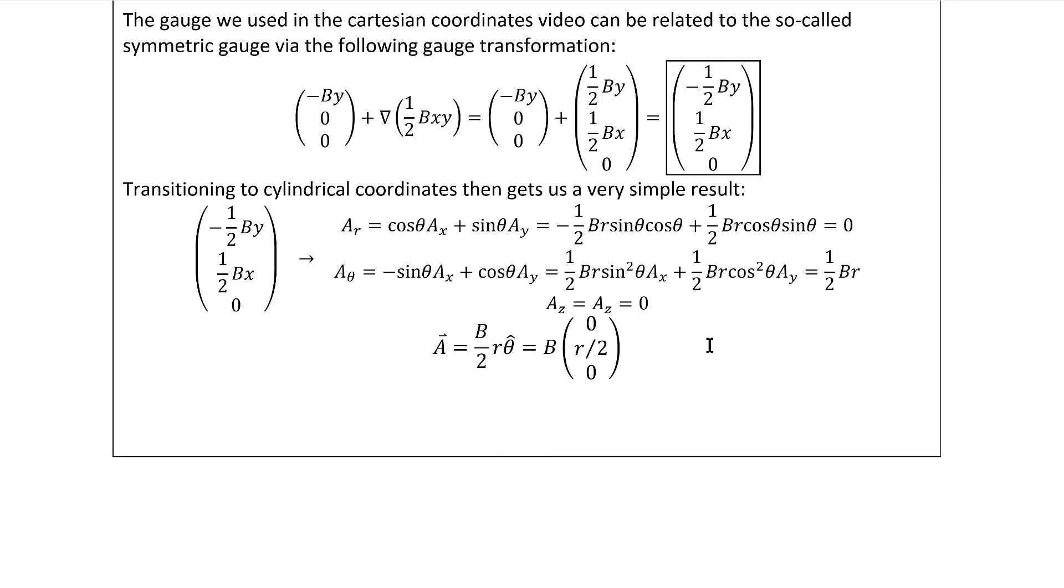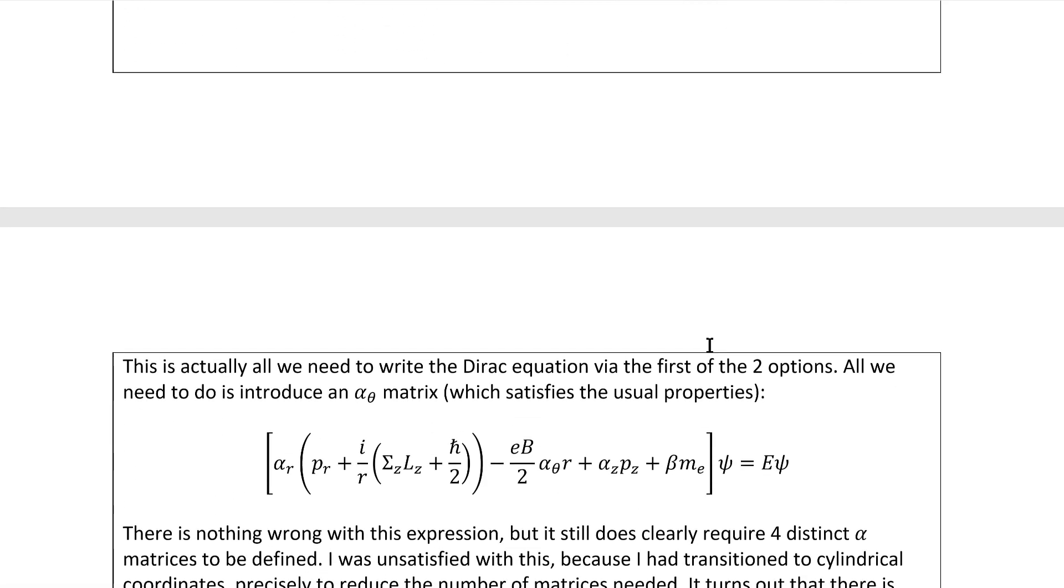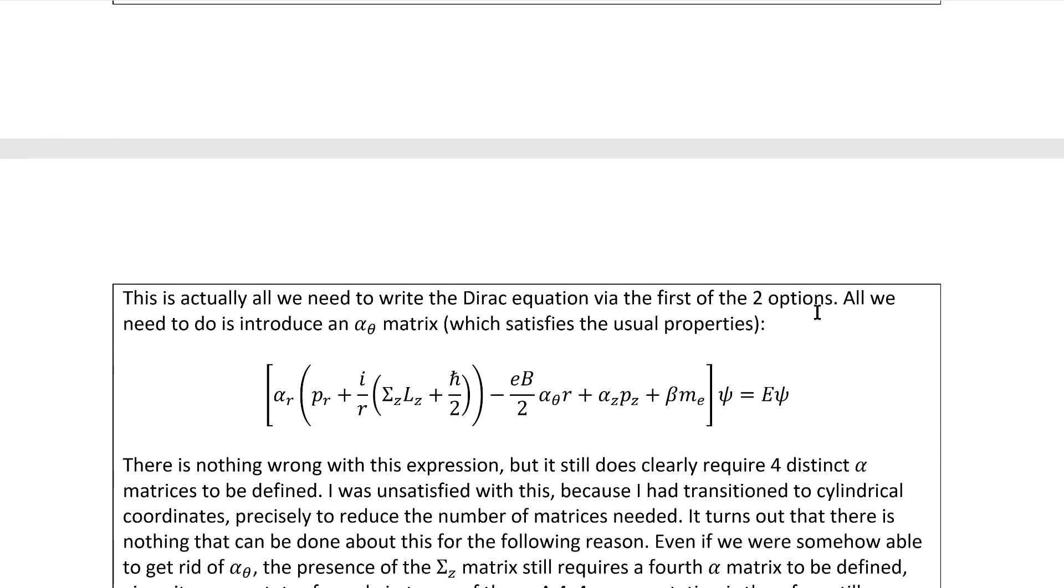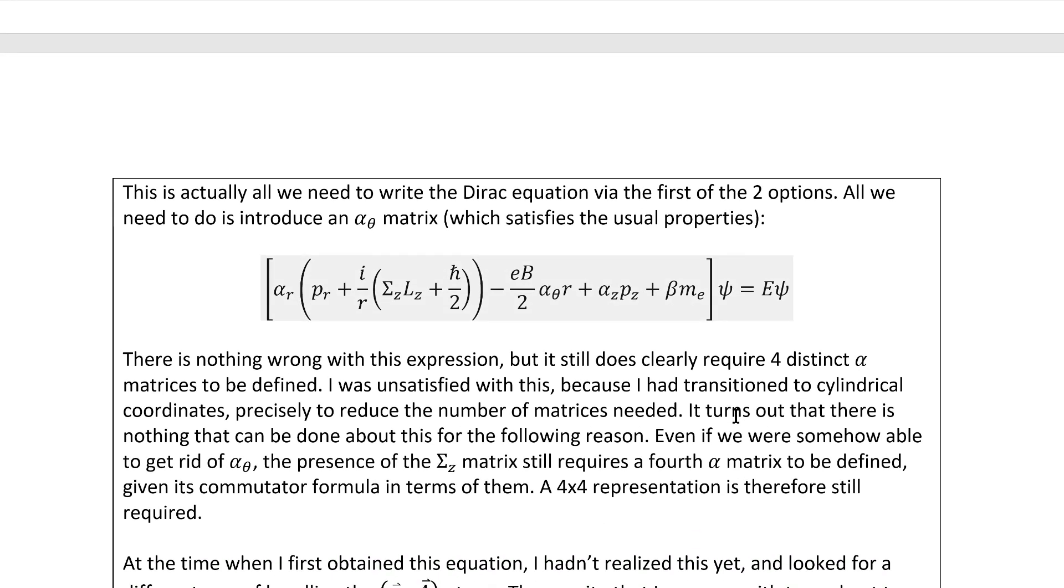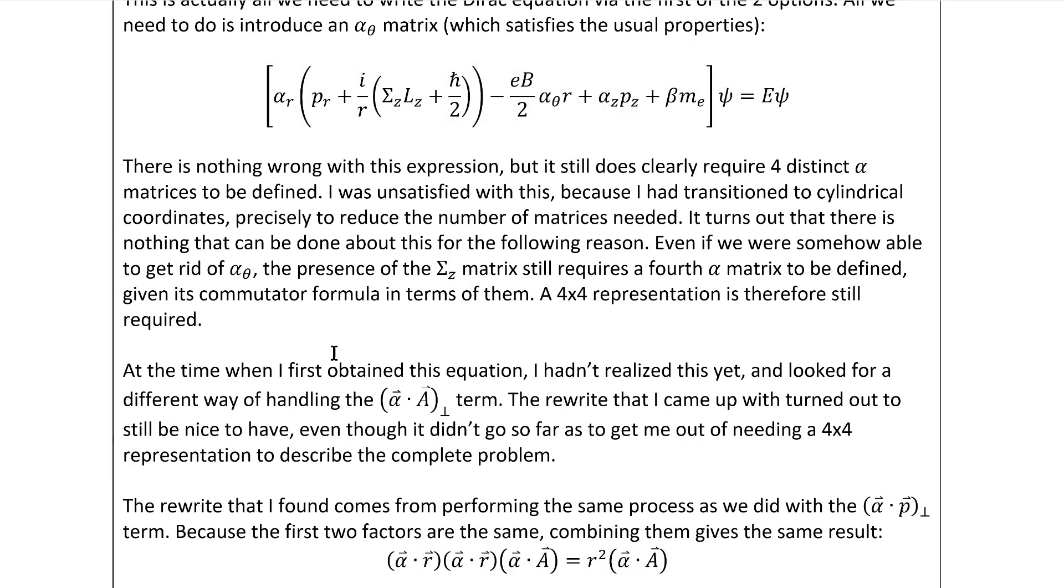This is actually all we need to write the Dirac equation via the first of the two methods that you can use for handling this alpha dot a dot product, and it leaves us with this Dirac equation here, which is quite pretty. There's nothing wrong with this expression, but it still does clearly require four distinct alpha matrices to be defined. I was unsatisfied with this because I had transitioned to cylindrical coordinates precisely to reduce the number of matrices needed. It turns out that there is nothing that can be done, at least as far as I know, about this for the following reason. Even if we were somehow able to get rid of the alpha-theta matrix, the presence of the sigma-z matrix still requires a fourth alpha or beta matrix to be defined given its commutator formula in terms of the alphas. It brings in the one that you don't seem like you need, even if you manage to get rid of alpha-theta explicitly. A 4x4 representation is therefore still required.